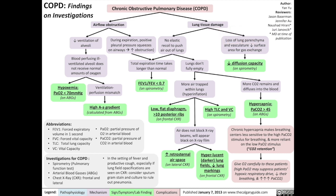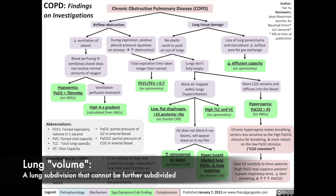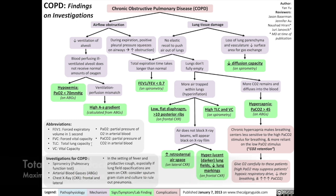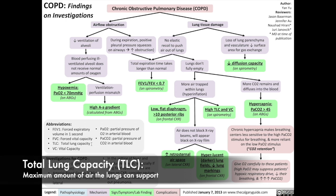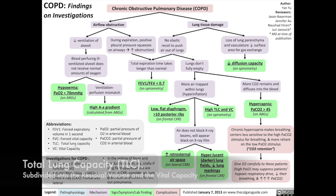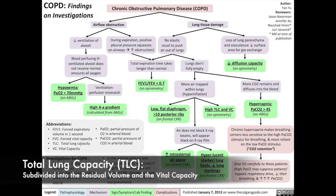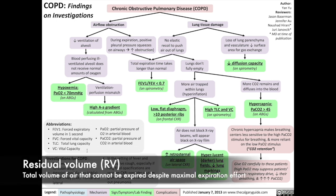Before we talk about the findings on investigations of COPD, we need to clarify some definitions. The lung can be divided into different volumes, all with different names. A lung volume is a subdivision that cannot be further subdivided, but a lung capacity describes a subdivision that can be further divided into smaller volumes. The maximum amount of air the lung can support is called the total lung capacity, TLC. TLC is subdivided into two subcapacities, one of which is the residual volume — the total volume of air within the lung that cannot be breathed out, even with maximum contraction of expiratory muscles.